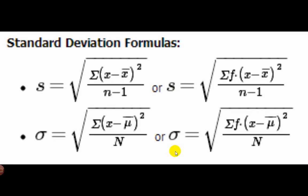We have a couple of formulas for standard deviation that change depending on whether we're looking at a sample or a population. For the sample, we find the deviation from the mean — take each x, subtract the mean, square it, add them all up, and divide by n minus 1. For the population standard deviation, we divide by n. Then we take the square root. We square the deviations to eliminate negatives, since adding positives and negatives would give us zero.